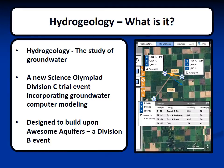Hydrogeology is the study of groundwater — hydro being water, and geology being the study of the earth. It also happens to be a new Science Olympiad Division C trial event that incorporates groundwater computer modeling. You might be wondering, what exactly is the difference between a trial event and an official event? A trial event is still in the development phase and will not count towards a team's official score. However, feedback from students trialing the event at competitions is extremely important in finalizing the event before it hopefully becomes official. This particular event is designed to build upon another event you may have heard of, Awesome Aquifers.